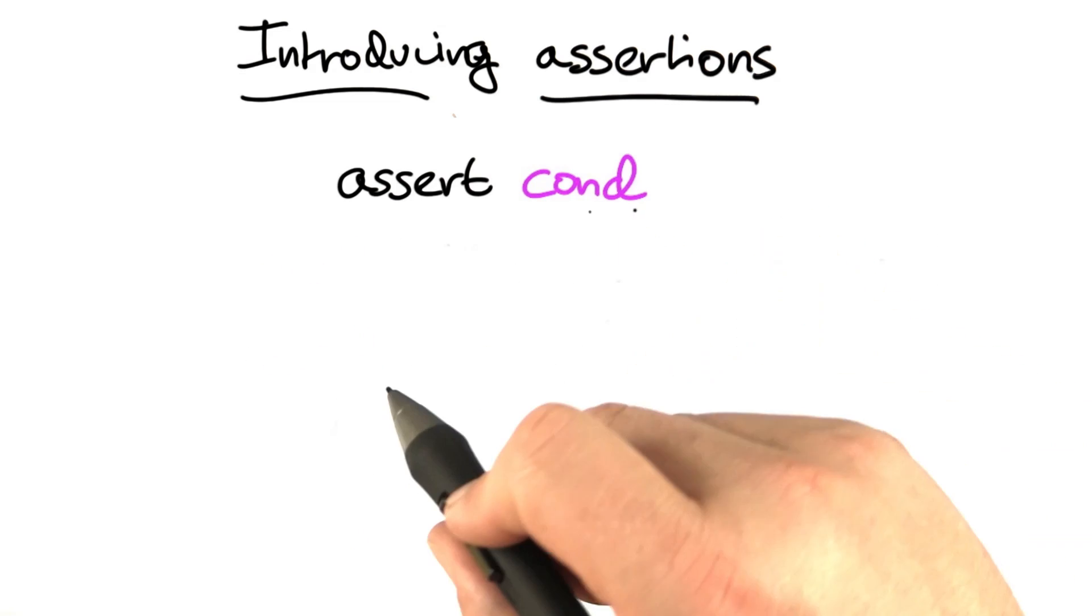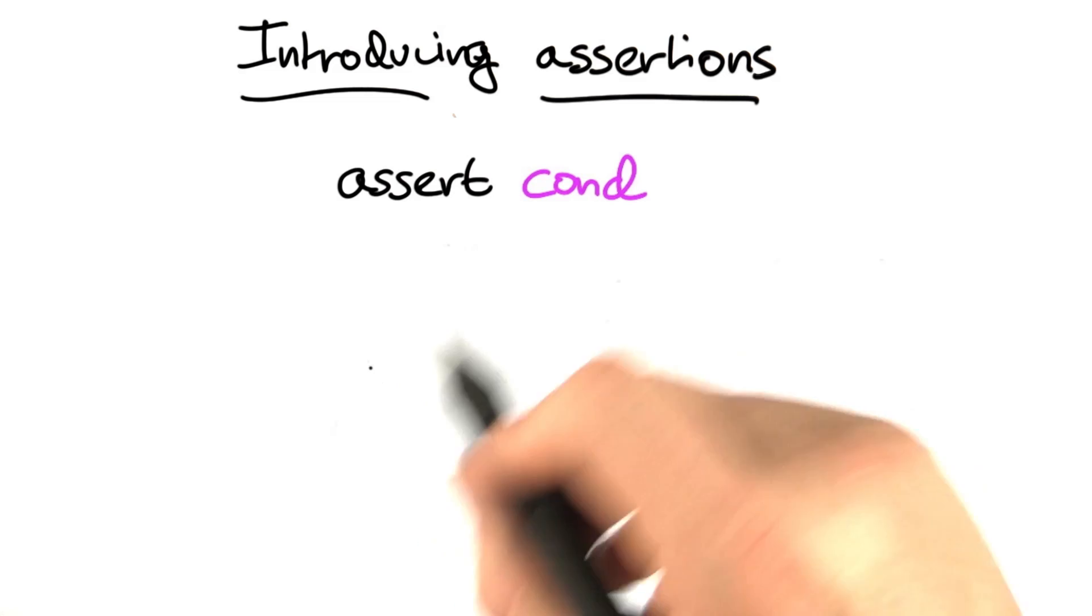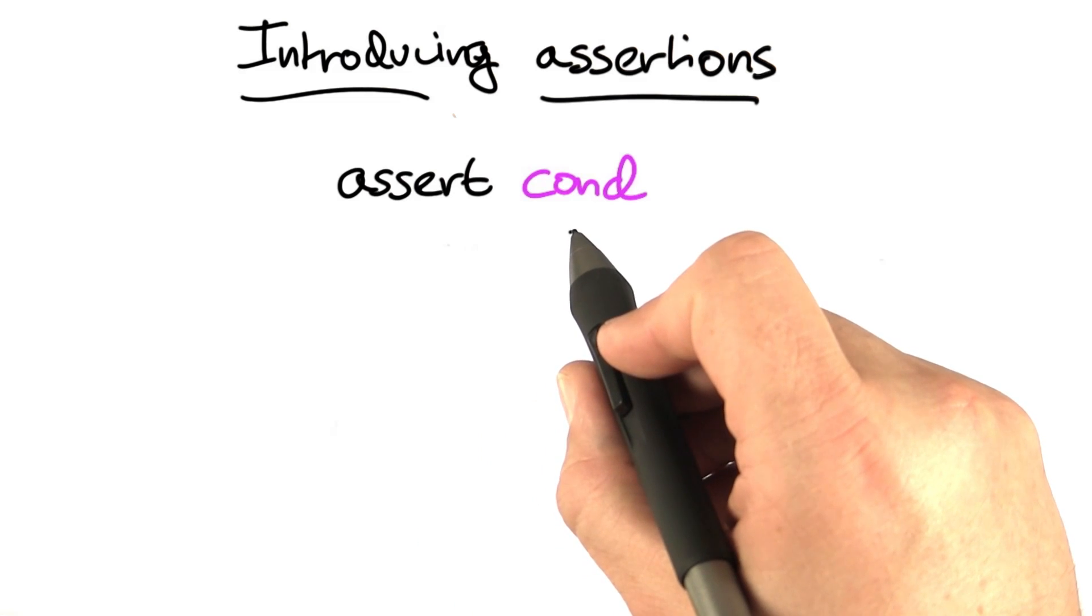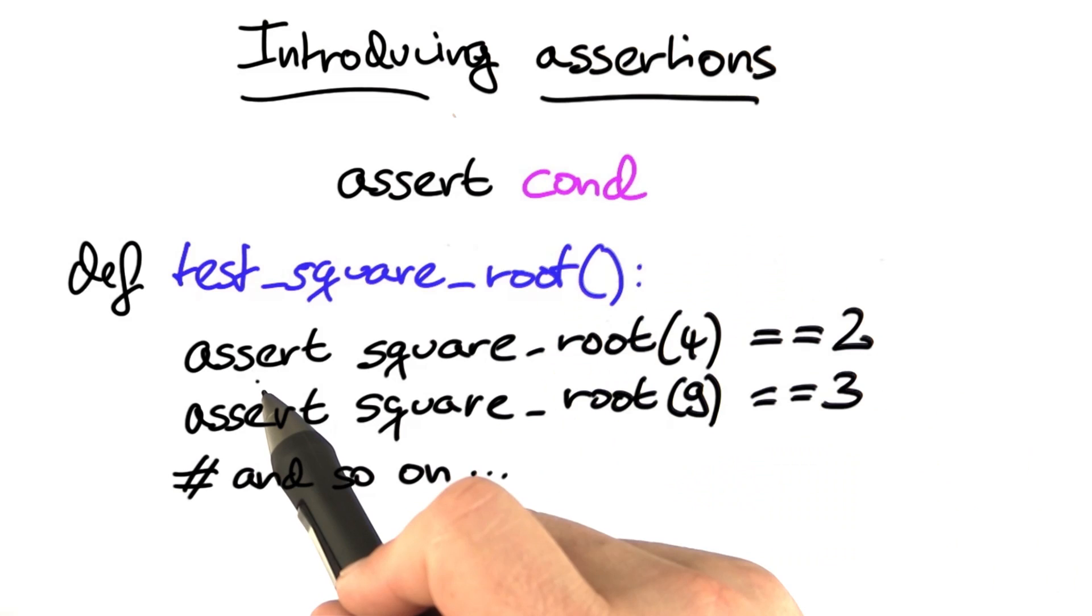When you're writing an assert condition, you assume that condition will hold. This is normally useful when you're writing a test. For instance, if we want to test a function square root, we can write a test function that asserts that square root of 4 is 2 and square root of 9 is 3.